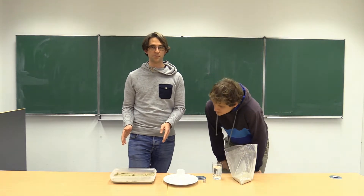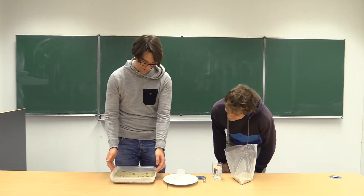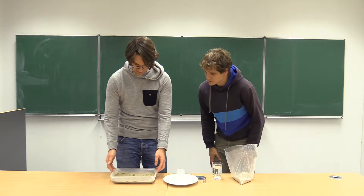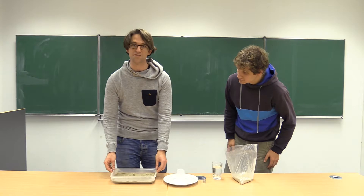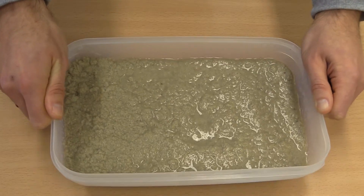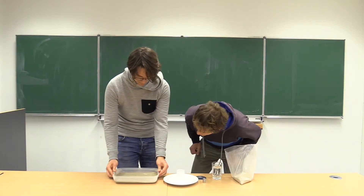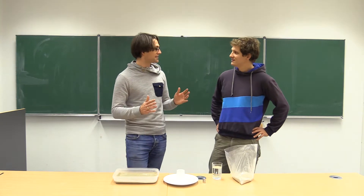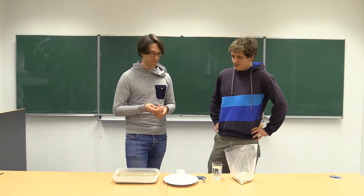Here we have sand mixed with water. This is not soil exactly, but it will behave in a very similar way. I don't see any water. Well, the water is in between the pore spaces, so you can't really see it. But what do you think will happen when I shake this? Oh wow, look at this — all the water is at the surface. The grains have been compacted and the water has been pushed from in between the grains to the surface. How can this happen? How is this possible?